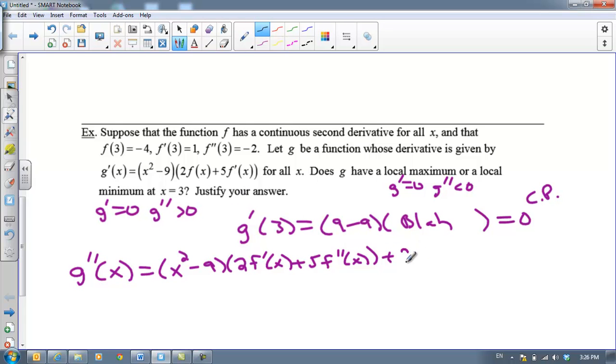I'm going to write the derivative of the first in front. The derivative of X squared minus nine is just two X. I just need to copy that second part over. So there is my second derivative of G as a letter.